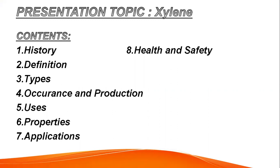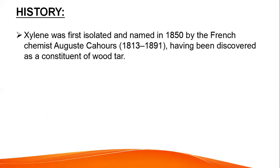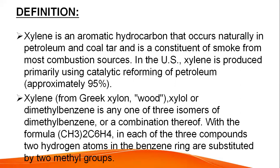History: xylene was first isolated and named in 1850 by the French chemist Auguste Cahors (1813 to 1891), having been discovered as a constituent of wood tar. Definition: xylene is an aromatic hydrocarbon that occurs naturally in petroleum and coal tar and is a constituent of smoke from most combustion sources.